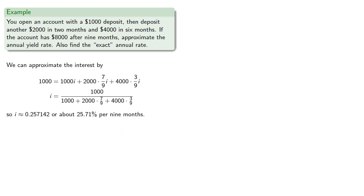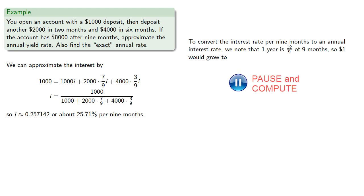To convert the interest rate per 9 months to an annual interest rate, we note that one year is 12/9ths of 9 months, so a dollar would grow to... So the annual interest rate is around 36%.